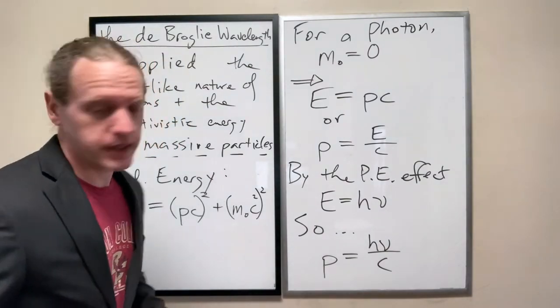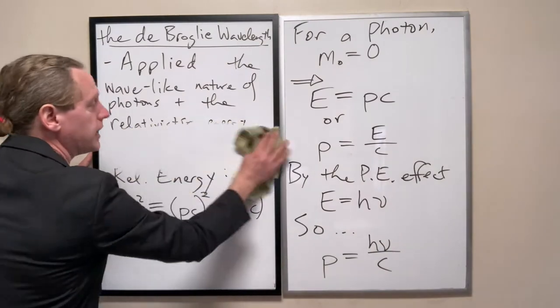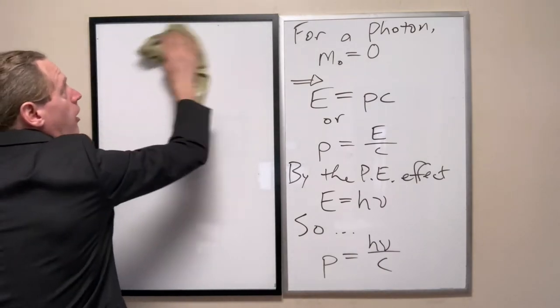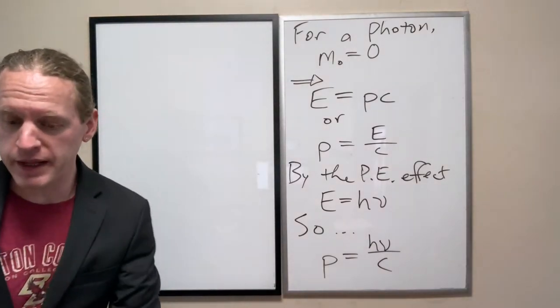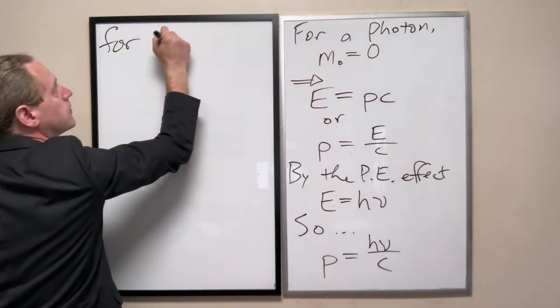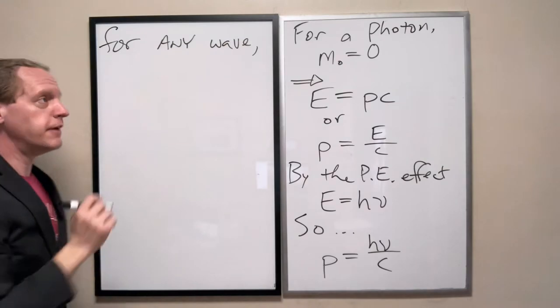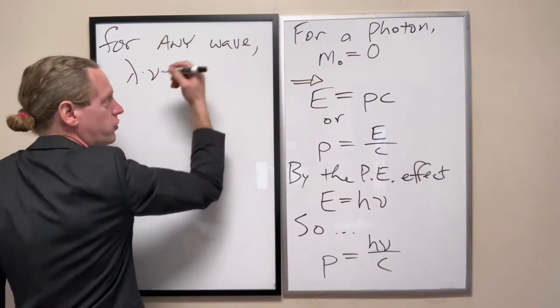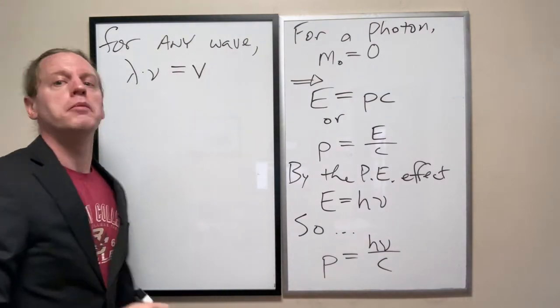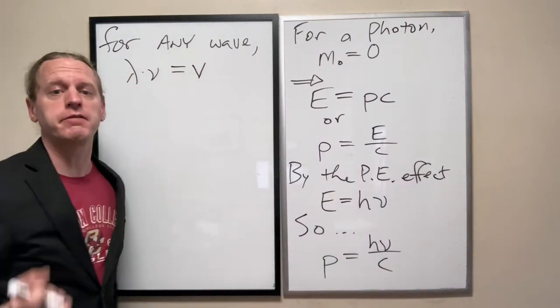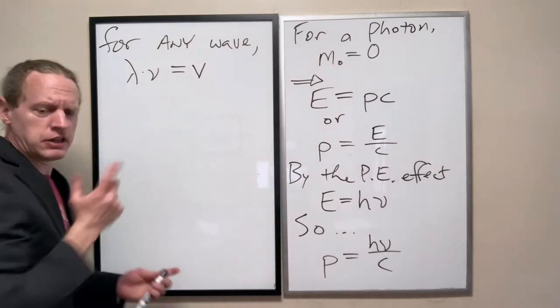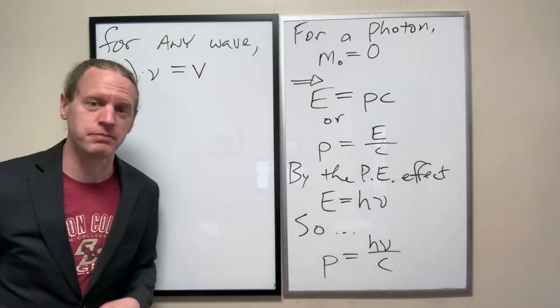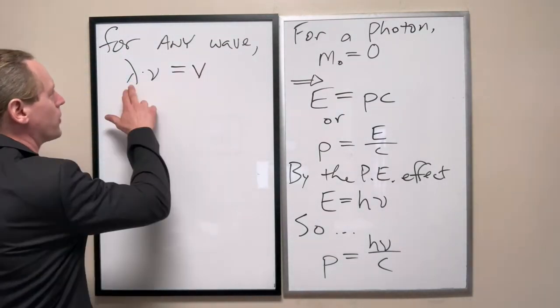We can simplify this further because, if you remember, for any sort of wave, the wavelength and the frequency are inversely related. For any wave, if you take the wavelength and multiply it by the frequency, that will always tell us the wave speed, which in this case I'll write as V. But when we apply it specifically for photons, you know exactly what that speed should be.